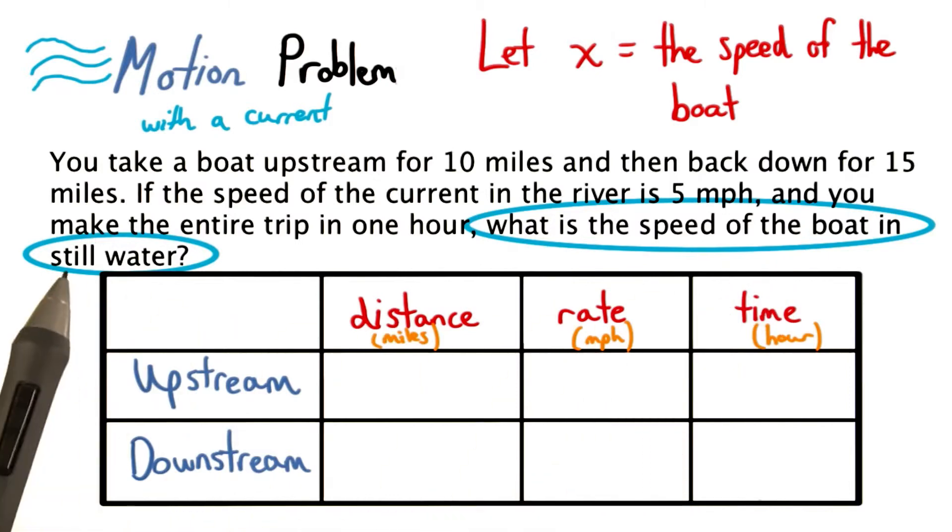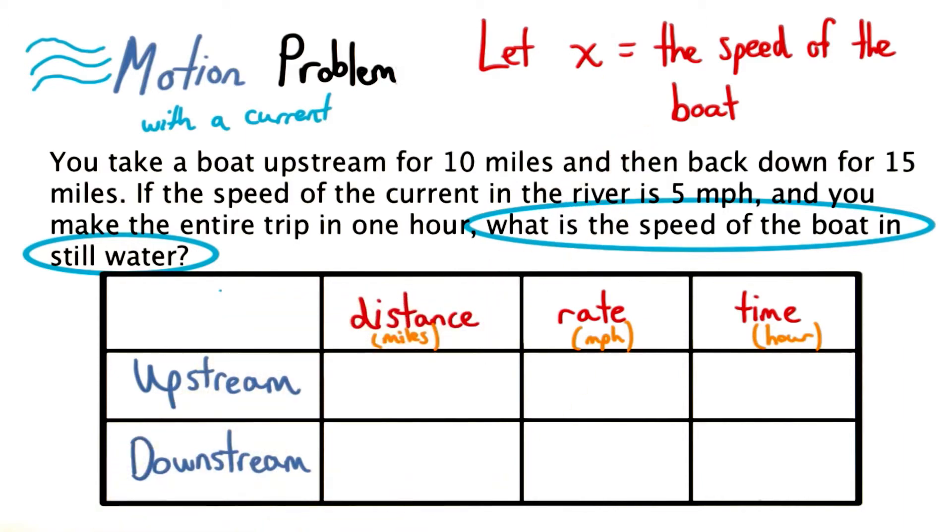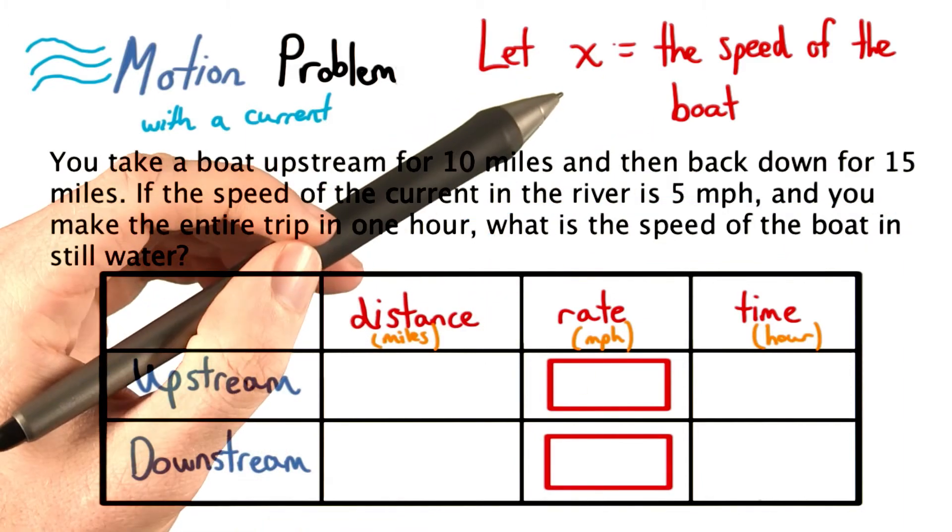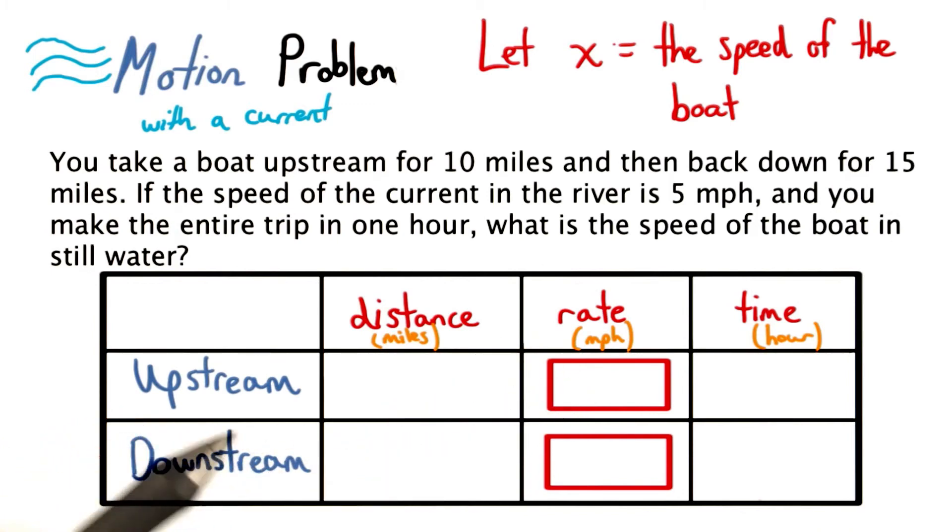We want to find the speed of the boat in still water. So let's make that be our variable. X is going to be the speed of our boat in miles per hour. So now that we have a variable, what expression can you write for the rate, or the speed of the boat moving upstream, and the speed of the boat moving downstream?